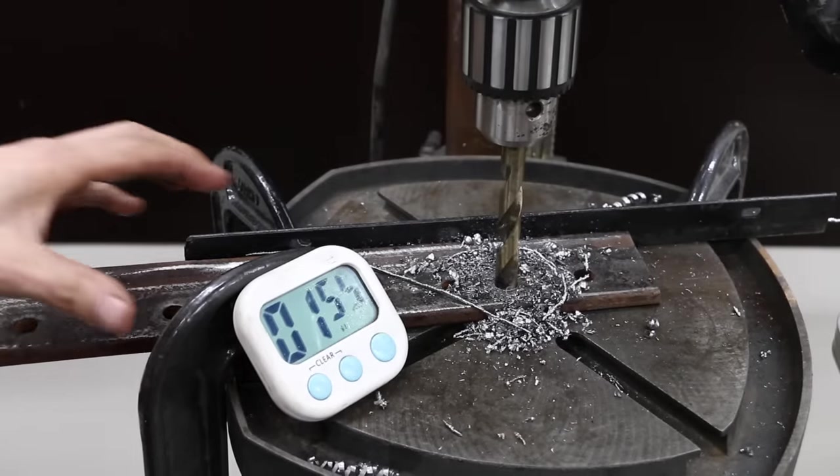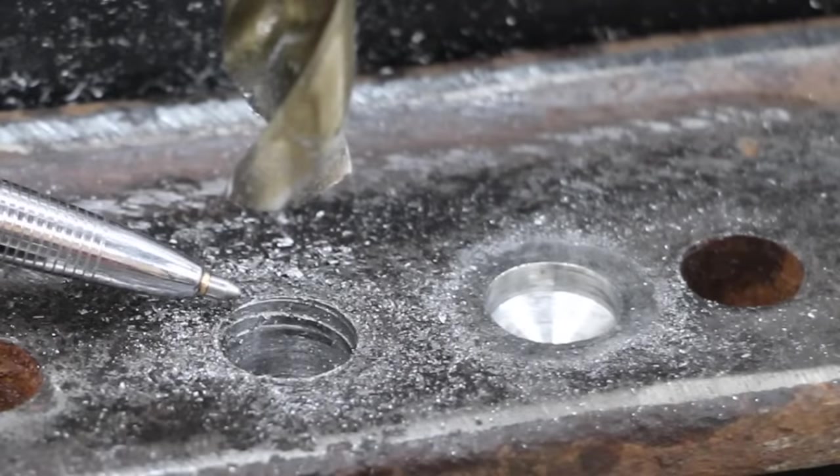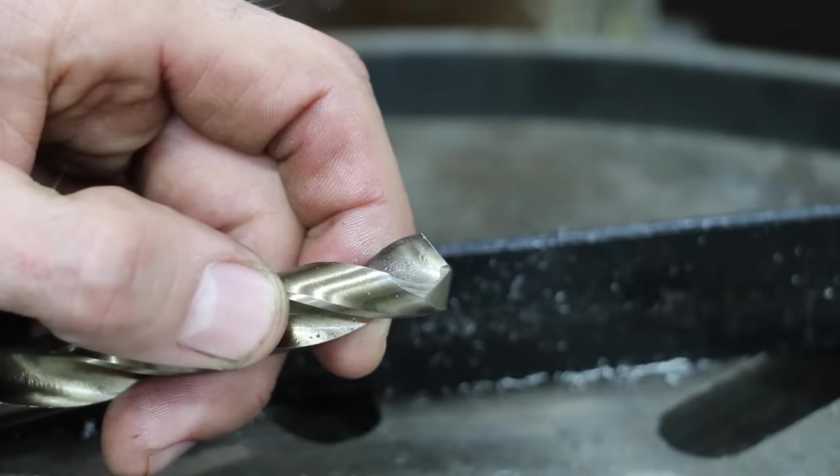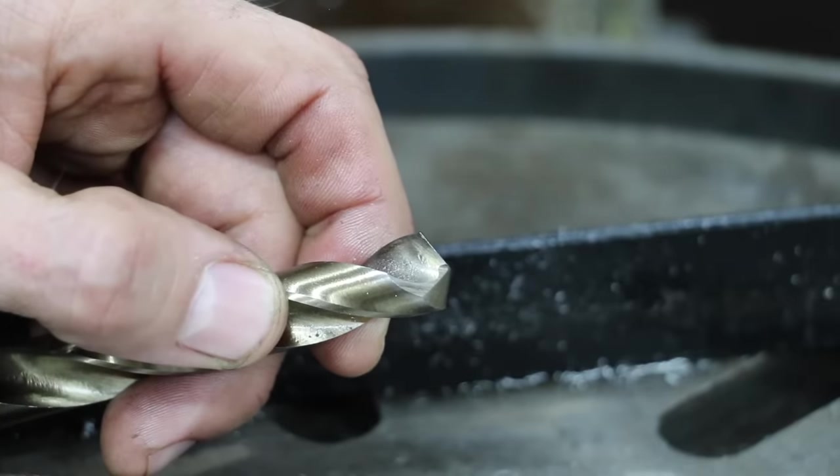A minute and 53 seconds for Craftsman. Just like last time, Craftsman just didn't leave a very smooth finish. A very small amount of wear on the cutting lip as well as the chisel. Testing DeWalt.